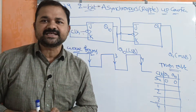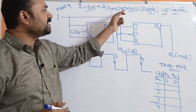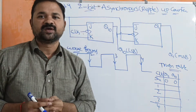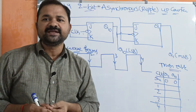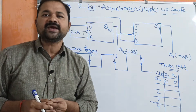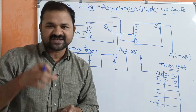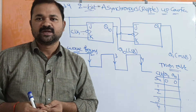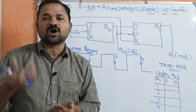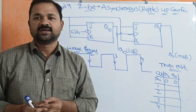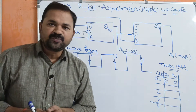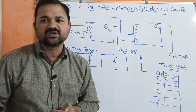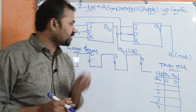Let us discuss about the 2-bit asynchronous or ripple up-counter. Asynchronous counter means we apply the clock pulse to the first flip-flop. The output of the first flip-flop is connected as the clock pulse to the second flip-flop. Likewise, the output of the second flip-flop is connected as the clock pulse to the third flip-flop, and so on.